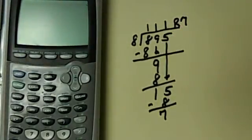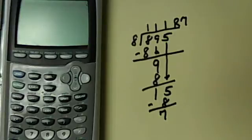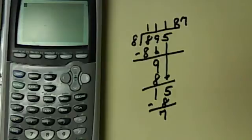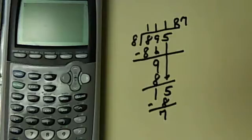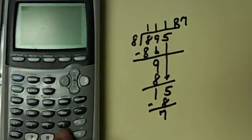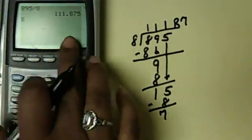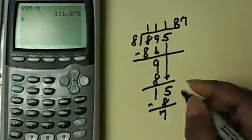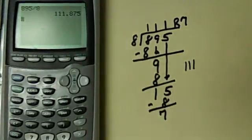But who wants to do all of this work when we have our calculator? So let's turn our calculator on and see what we need to do. The first thing is you have to do regular division — so you divide 895 by 8. The first number is your whole number, just like we got over here: 111. That's your whole number.